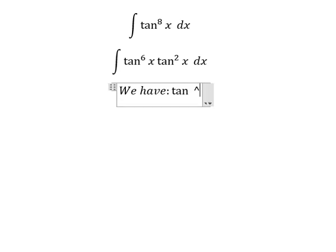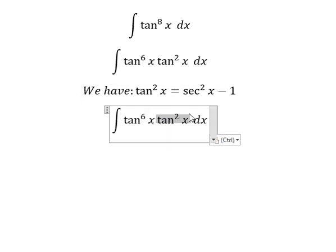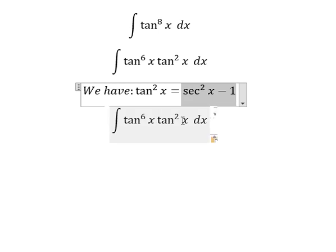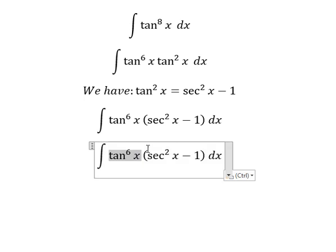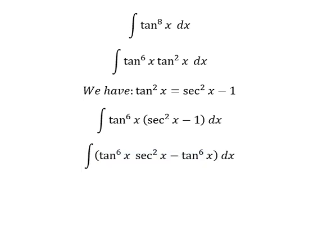tan^2(x) equals sec^2(x) minus 1, so we need to transform this one into this form. Next, this one is multiplied by this one and number 1. Now let's go to the second one.